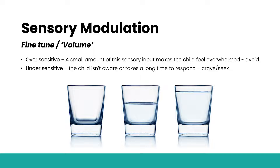If over-sensitive, a child will avoid that input — for example, if over-sensitive to noise they might hold their hands over their ears or run away from loud sounds. If they are under-sensitive, they have a large glass and won't be aware of information coming in or it might take them a long time to respond. They are likely to crave or seek more — for example, constantly on the go, spinning, jumping. On days you're tired or stressed, that ability to process information becomes even harder, making your glass more likely to overflow.